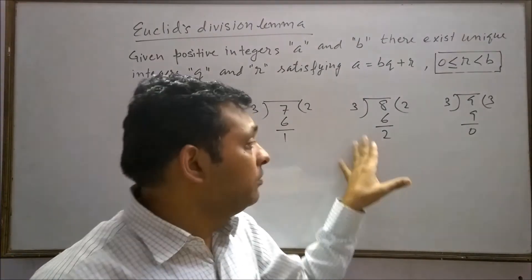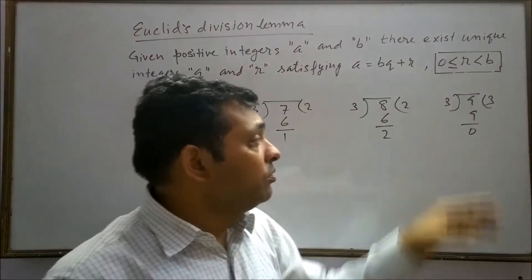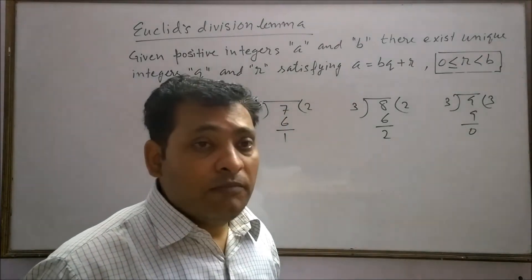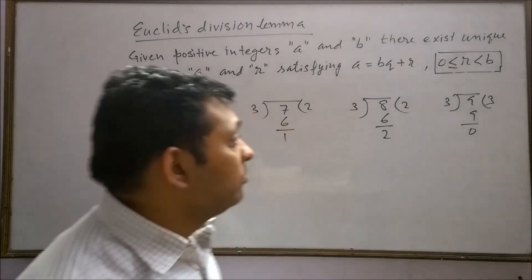If we divide 11 by 3, the remainder will be 2 and so on. If we divide 12 by 3, the remainder will be 0.